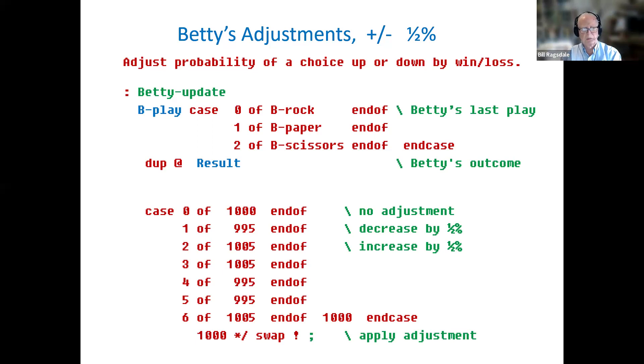If, on the other hand, she lost, in the case one, Alan would win, Betty will adjust that play downward by one-half of 1%, which is a decimal point 995. If, on the other hand, she won, then case number two takes effect, and its value is 1, 0, 0, 5, which represents an adjustment of 1.005, or an increase of half a percent. So in response to all those seven situations, Betty adjusts her probabilities. At the bottom, we see a scaled multiply, the 1,000 times divide, does the adjustment to unity of all of these probabilities, or all these adjustments.